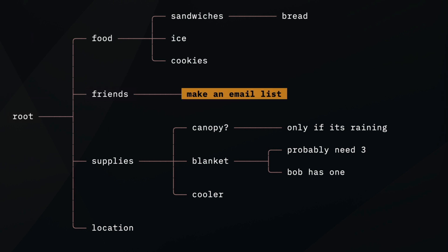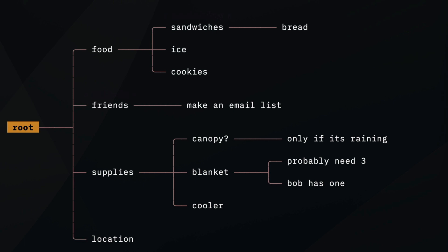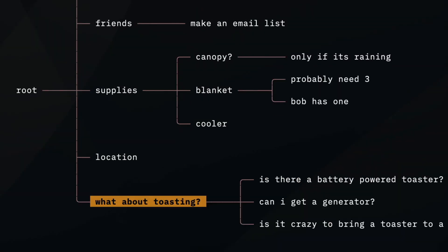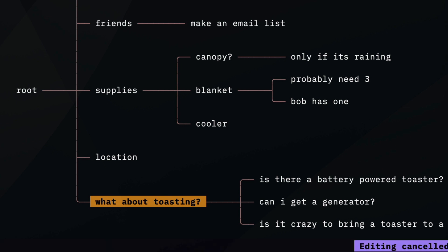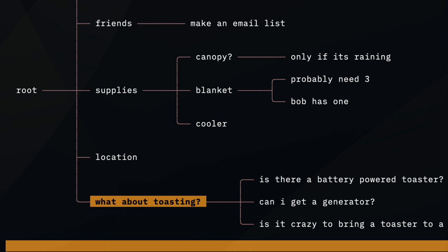Then I can come back to the root — you can press M to go straight to the root — and then press P to paste it. Now I've got toasting as a top-level item. I can press E to bring it up for editing, or if I press Shift-E, that brings up an empty item to replace what was there, so I can just type 'toasting.' I can totally imagine getting comfortable with these keyboard shortcuts, and since I'm already comfortable with Vim shortcuts, I can imagine flying through edits really fast.